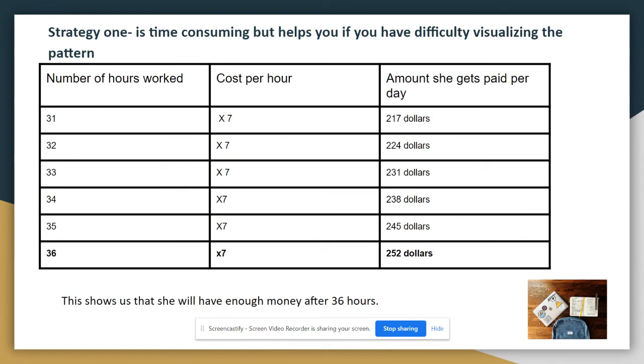And this got me to $210. Again, it's not enough. So I had to continue. And then it started to get interesting. When I did 35 hours, it got me to $245, which is close to $250. But if I went to a store and gave them too little, they're going to say sorry, you can't buy it. So I needed to have a little bit more. So I had to go one more. So I got to 36 hours times $7 an hour. That got me to $252. So this shows us she's going to have enough money after 36 hours. So that's one strategy.